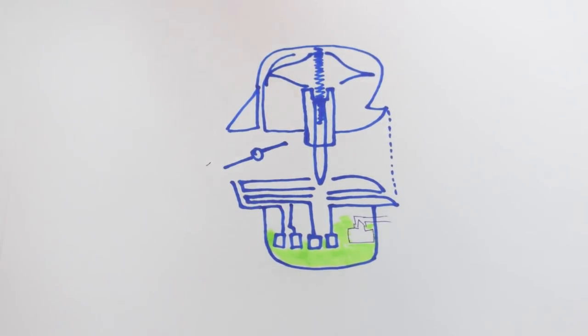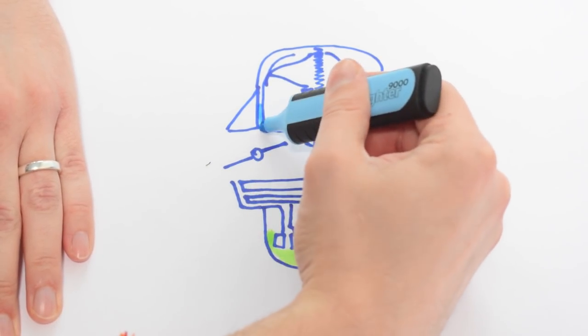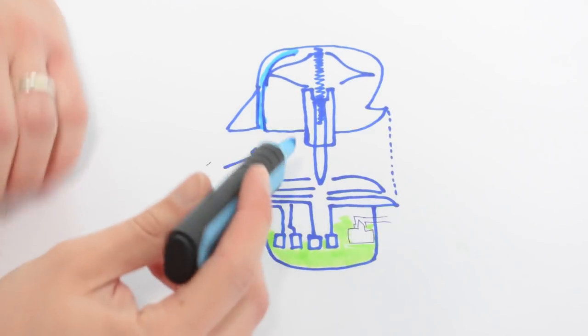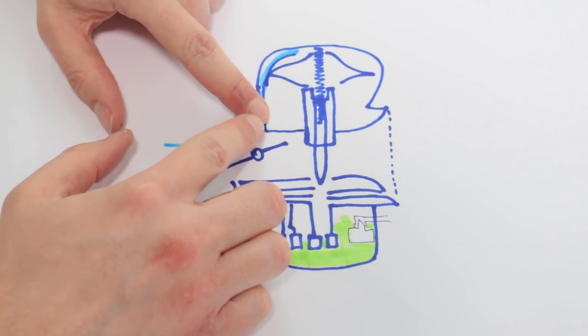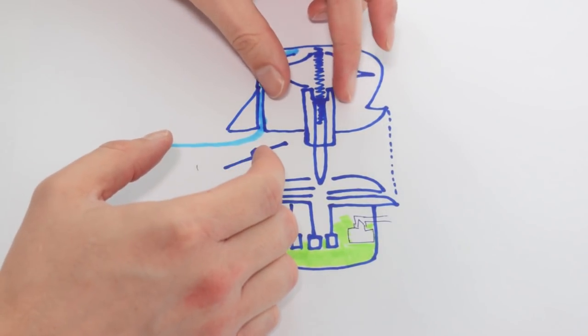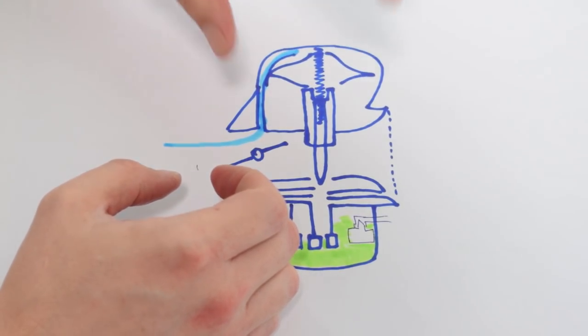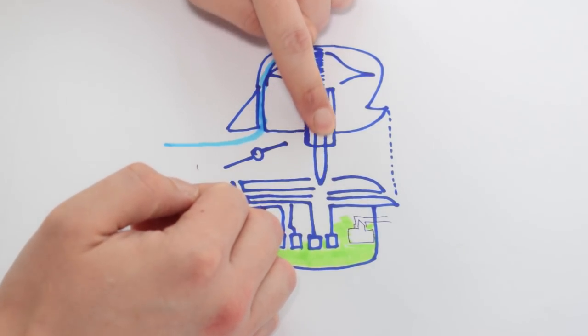When we do that we expose this little passageway here which leads up to the diaphragm to engine vacuum. As it's exposed to engine vacuum, the engine vacuum sucks up the diaphragm and with it lifts up this little piston and the needle.